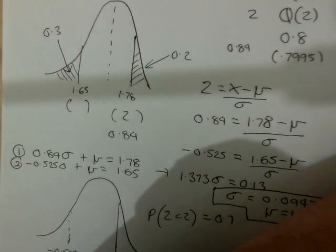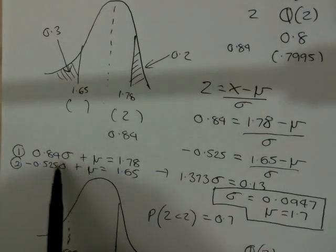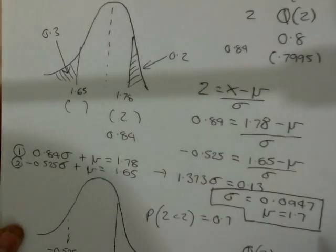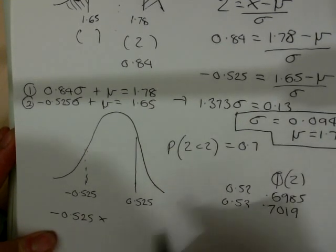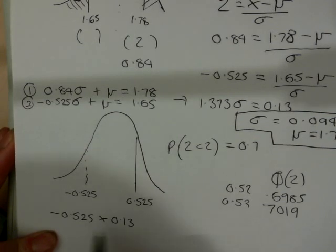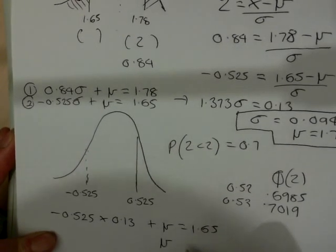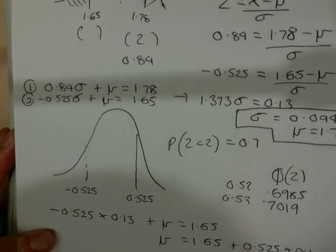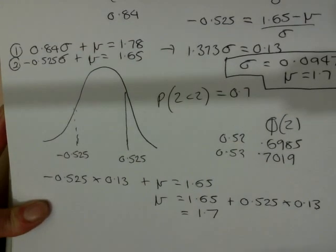I'm trusting that you can take that value of sigma, substitute it into either of these equations, and then take to the other side and add it to 1.65. Let me show you just in case you're not sure what I'm doing. Take minus 0.525 times the value of sigma 0.0947. That will give me plus mu equals 1.65. So, then mu will equal 1.65 plus 0.525 times 0.0947. And you'll find that that will come out at 1.7 for mu.